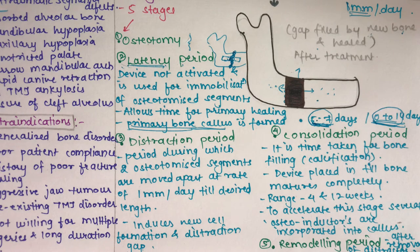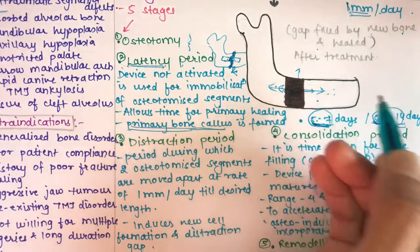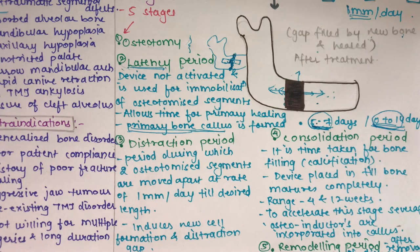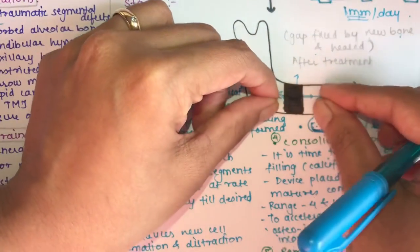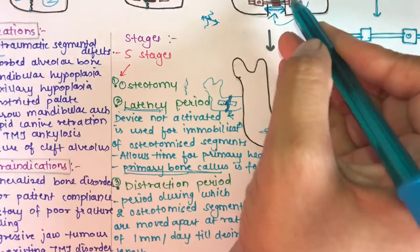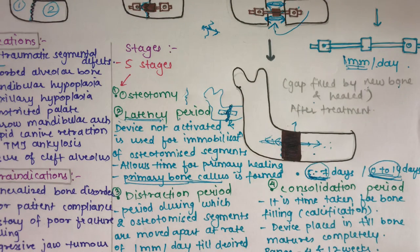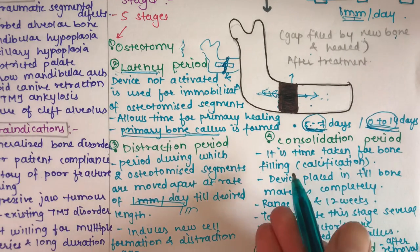The distraction period is during which the two osteotomized segments are moved apart, usually at the rate of one mm per day, until the desired length is achieved. The traction force delivered to the bone segments through the distractor induces new cell formation, creating the distraction gap. The frequency and rate of distraction are very crucial during this phase, with the ideal rate being one mm daily.